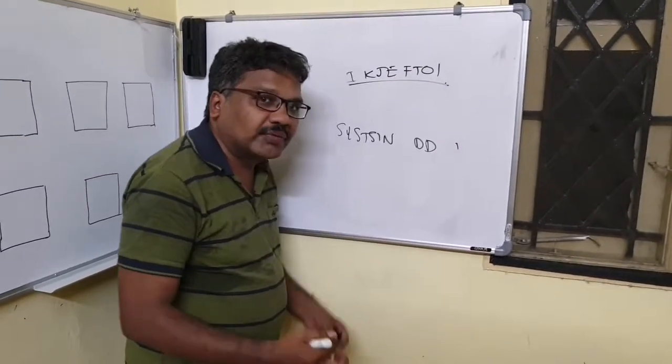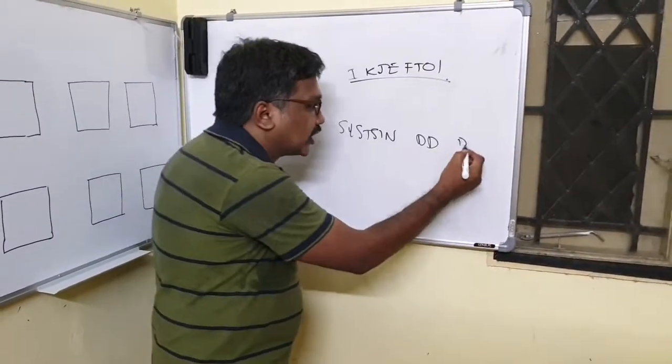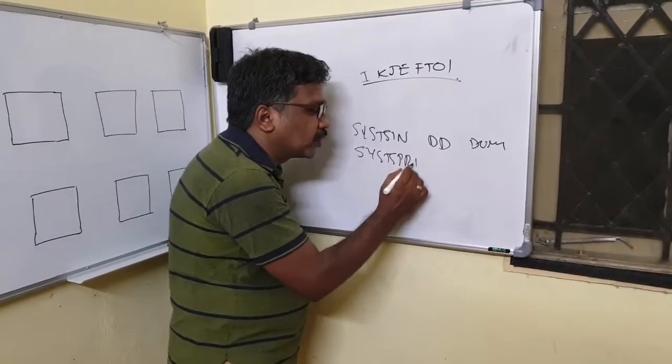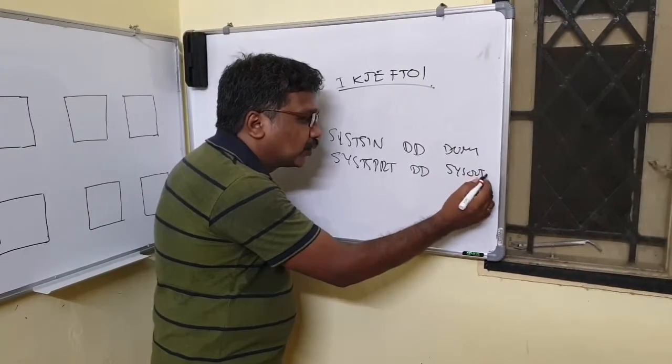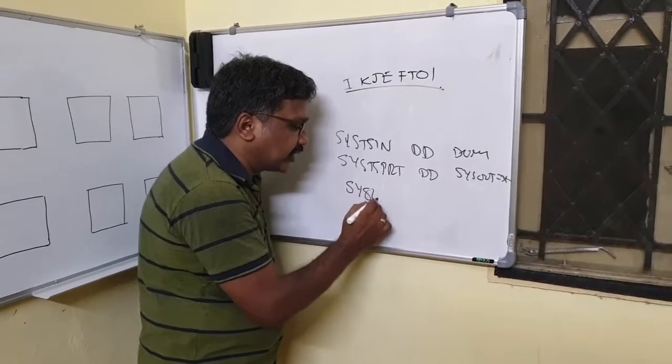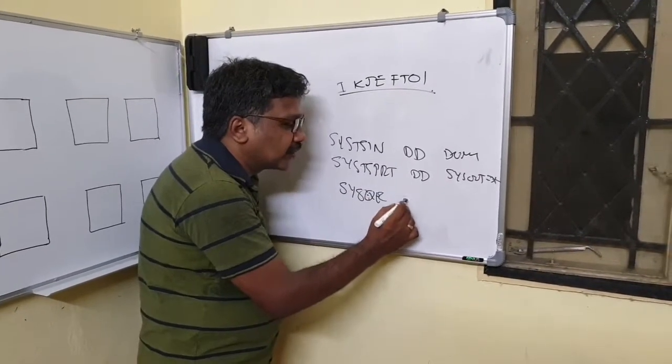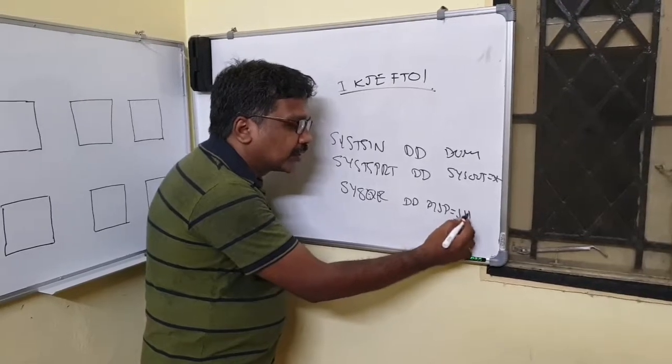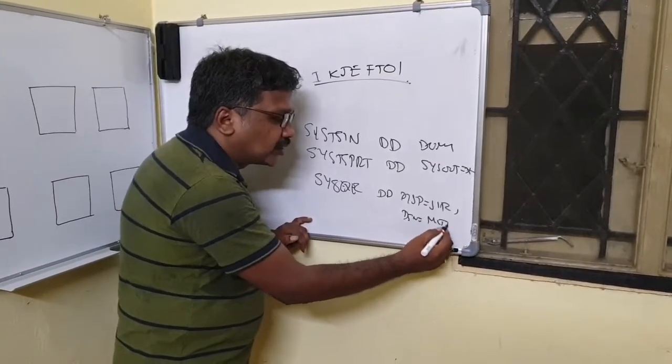However, our program we are not going to feed any input so it can be dummy. And SYSTSPR is nothing but where you will get the output, so let's make it out result equal to star. And we have to allocate a data set called SYSEXEC so that our library will be searched here.